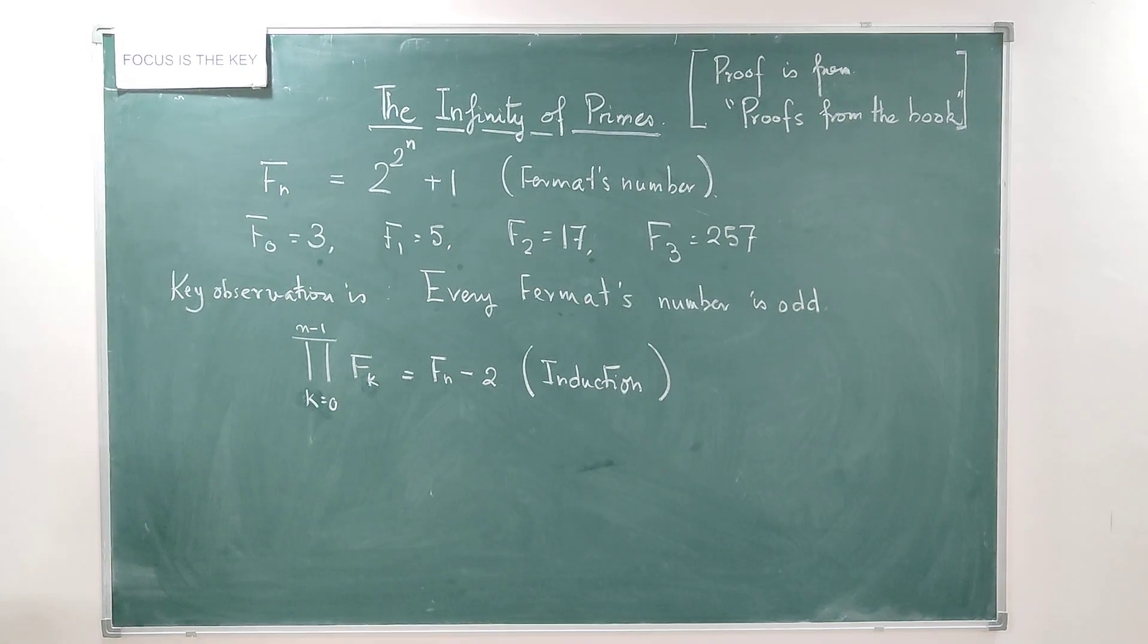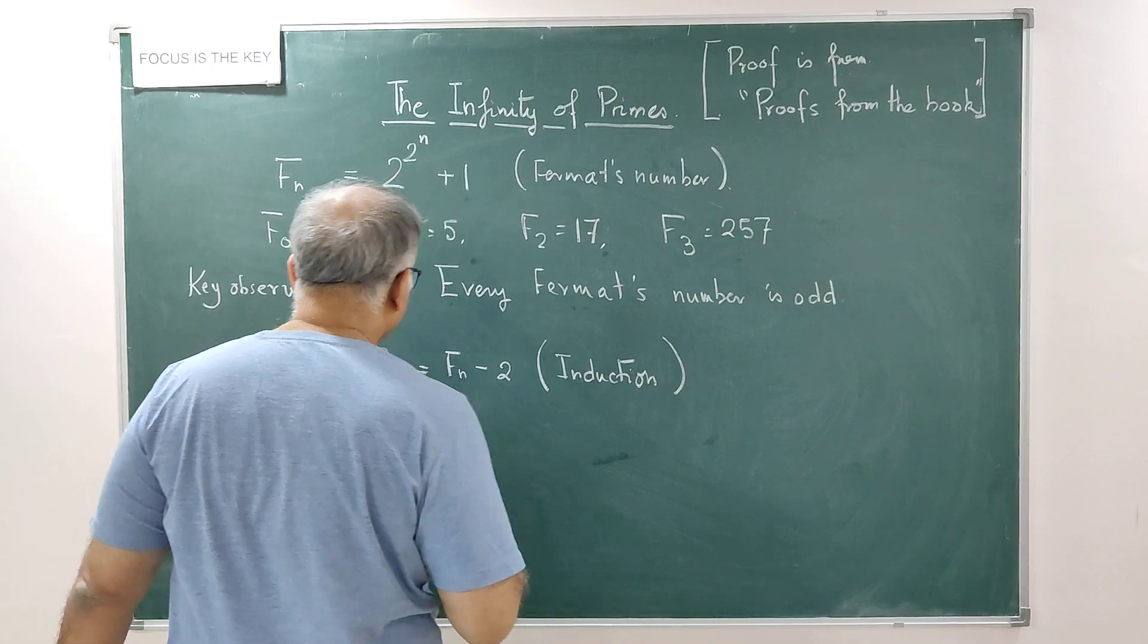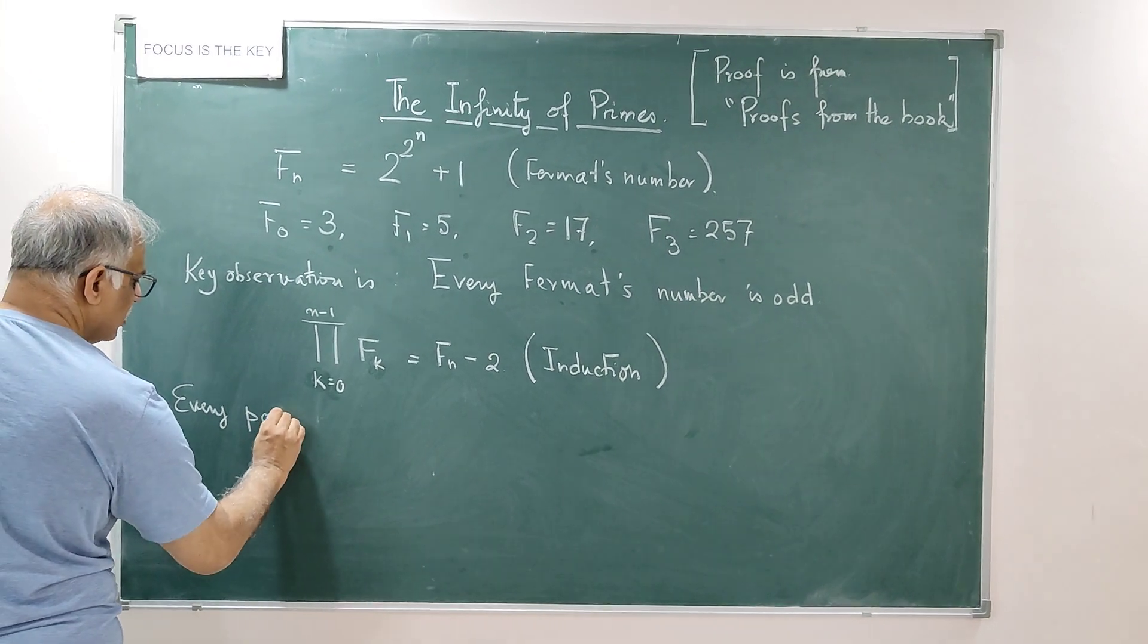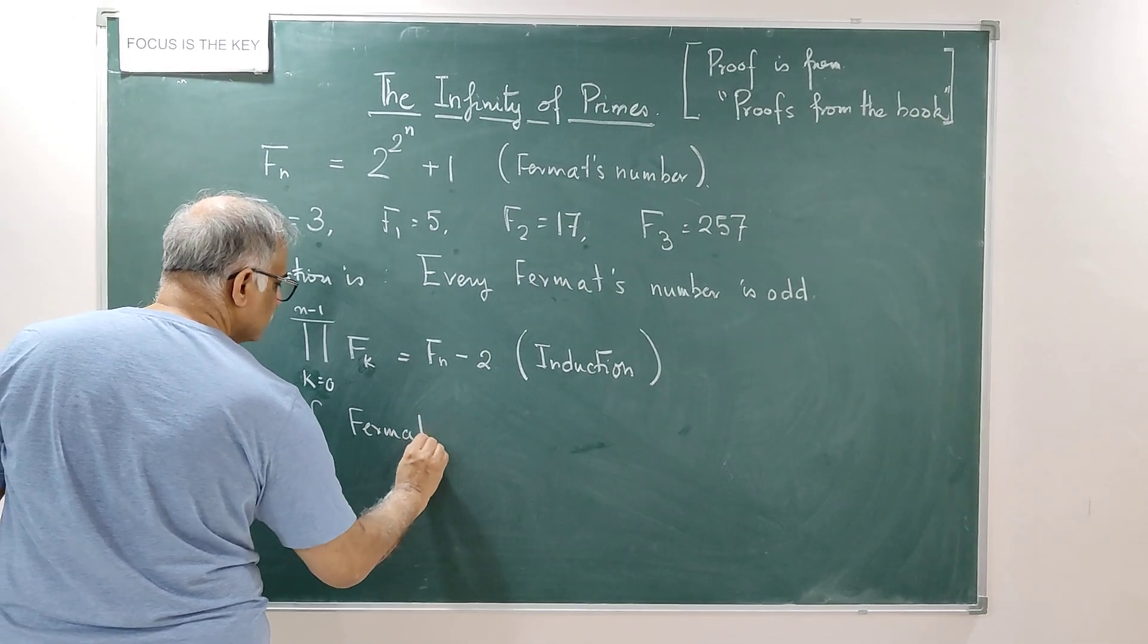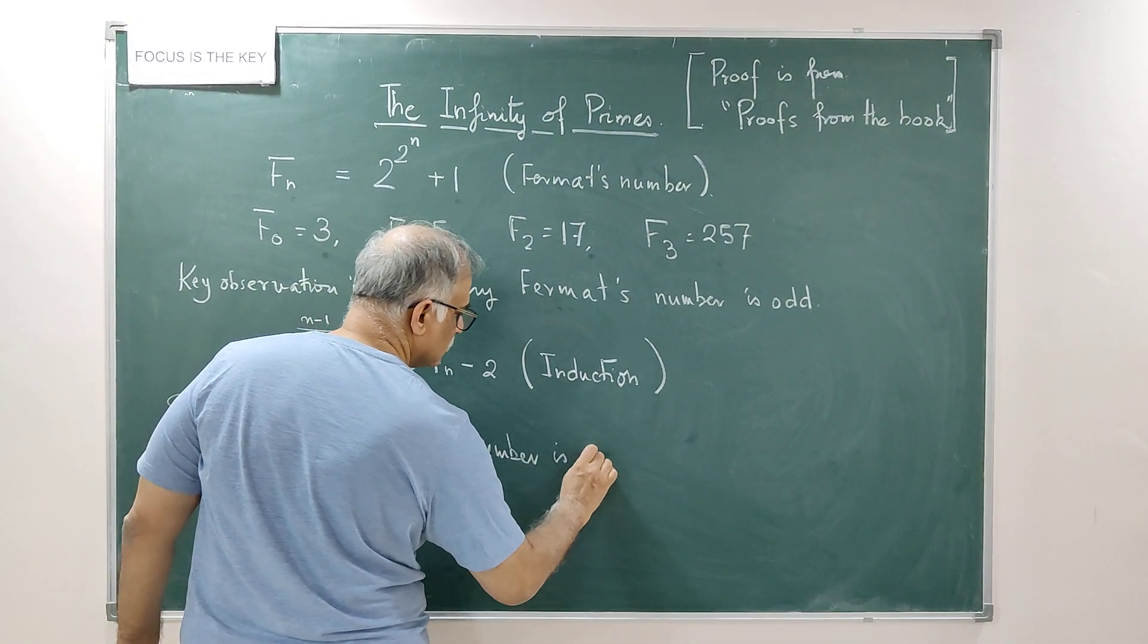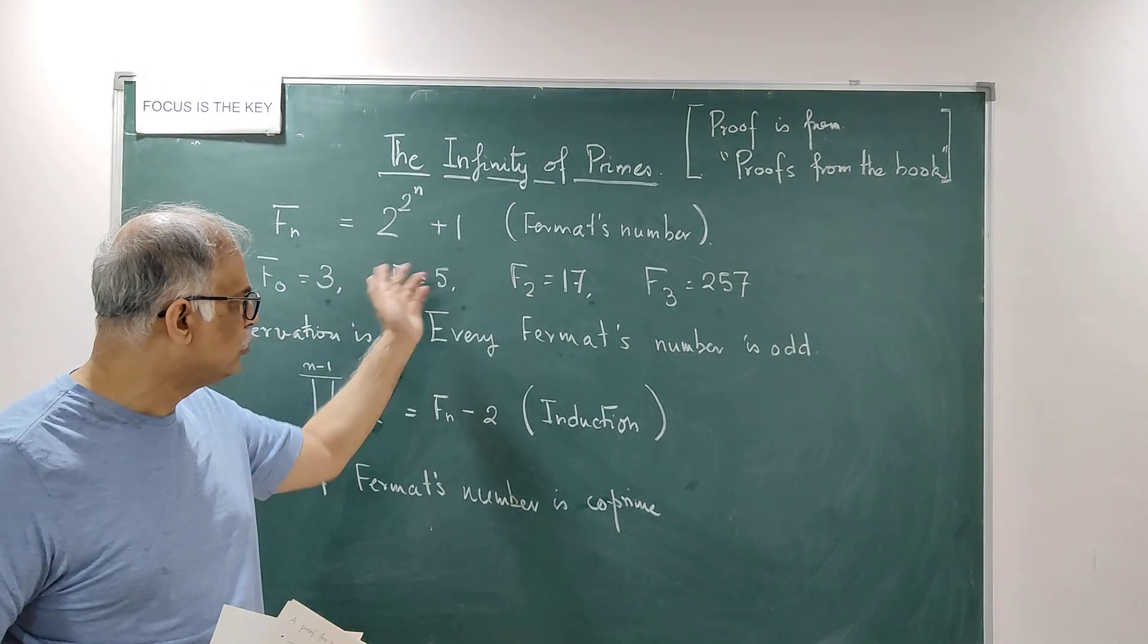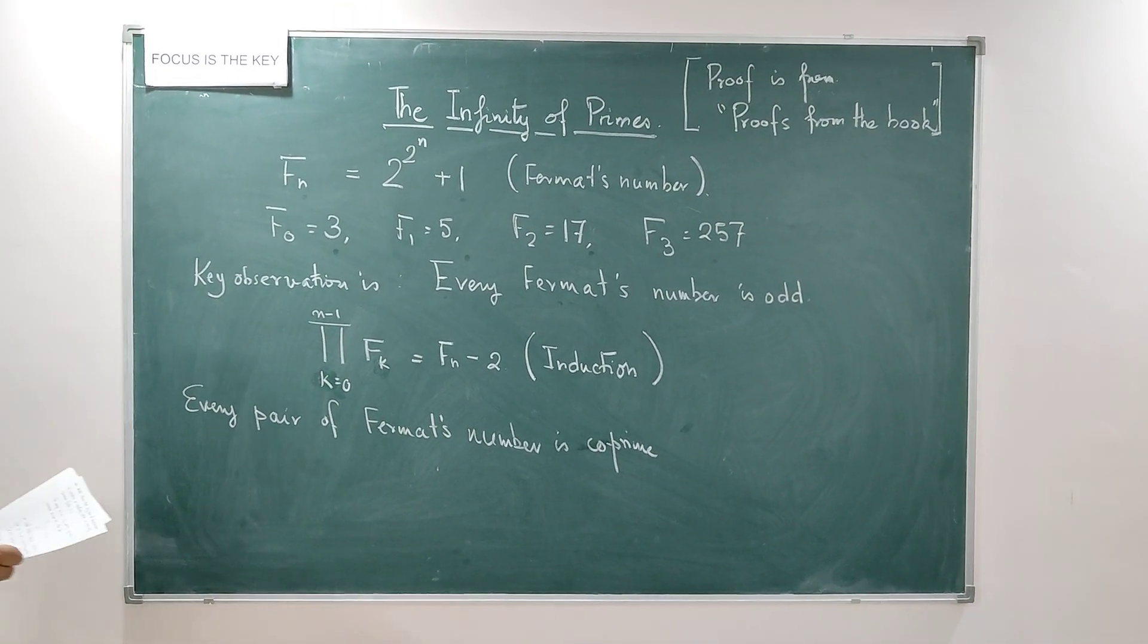This now is important to understand and this is the crucial step: that every pair of Fermat's numbers is coprime. Coprime means the only common factor that these two numbers have, any two numbers have, is 1. It cannot have any other common factor than 1.